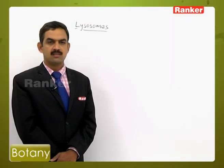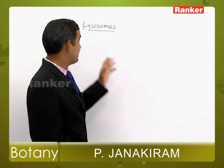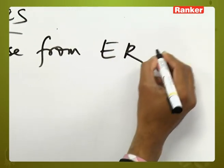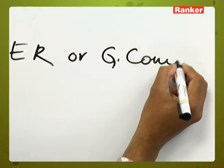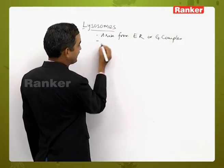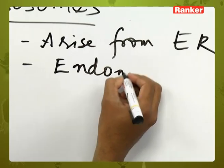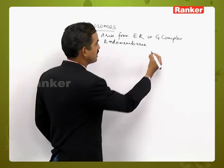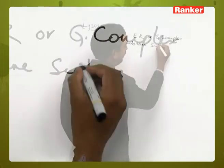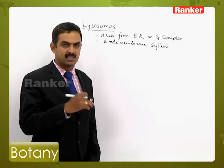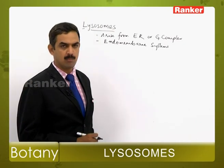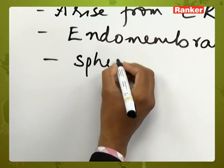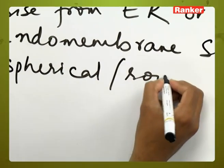Lysosomes are the cytoplasmic cell organelles. These cell organelles generally arise from either the endoplasmic reticulum or the Golgi complex. Lysosomes are part of the endomembrane system, just like the Golgi complex and endoplasmic reticulum, because their functions are coordinated with other cell organelles such as the endoplasmic reticulum and Golgi complex. Generally, lysosomes are spherical or round-shaped structures.